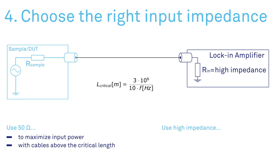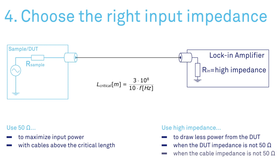If you need to measure the voltage drop at the sample very accurately, it is essential to keep the influence of the measurement instrument to a minimum. This is done by switching the input to high impedance.